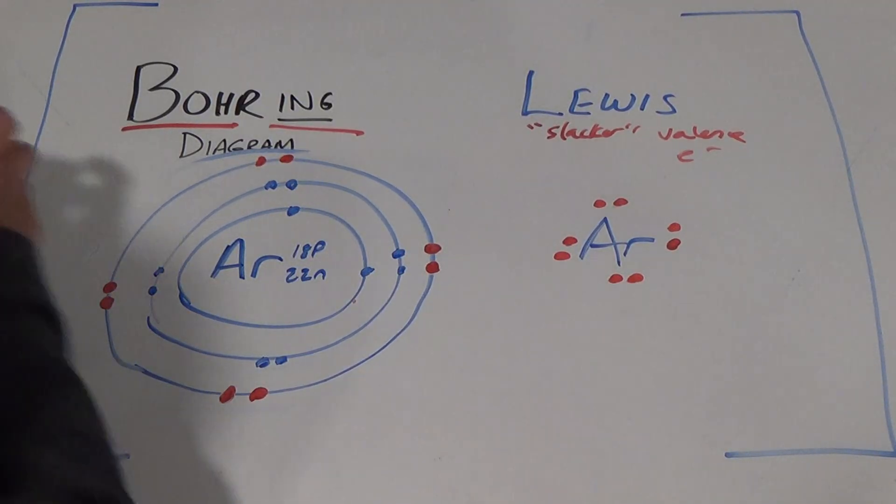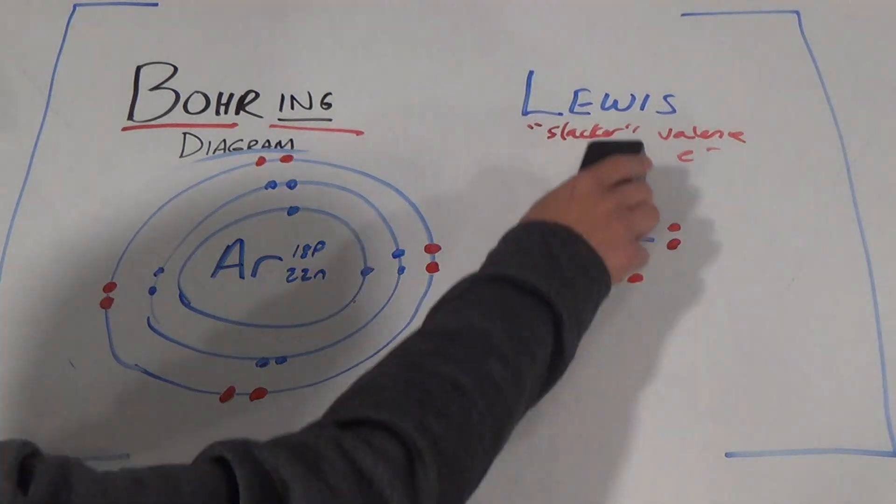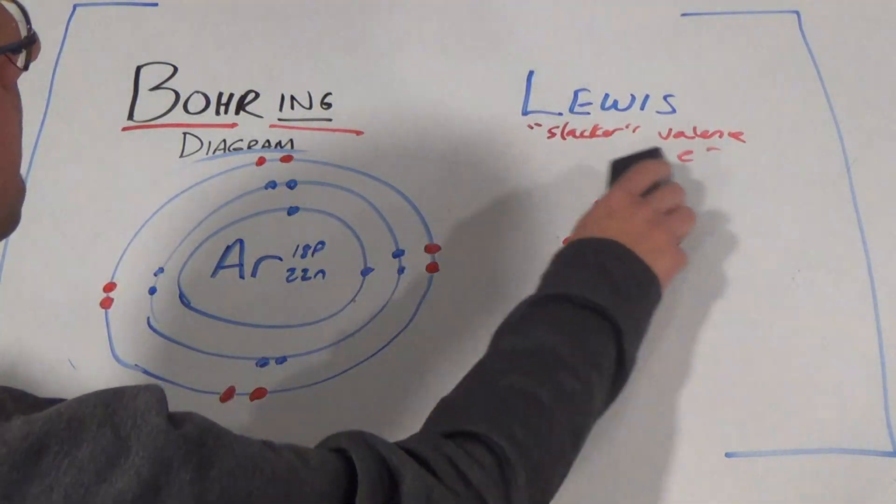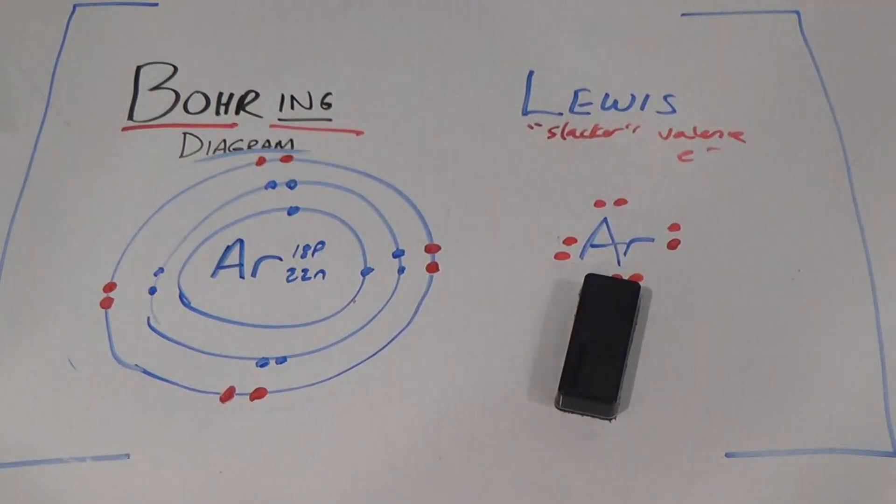So you see the difference? Boring shows everything. Lewis shows just the valence electrons. Let's hit stop for this part of the video.